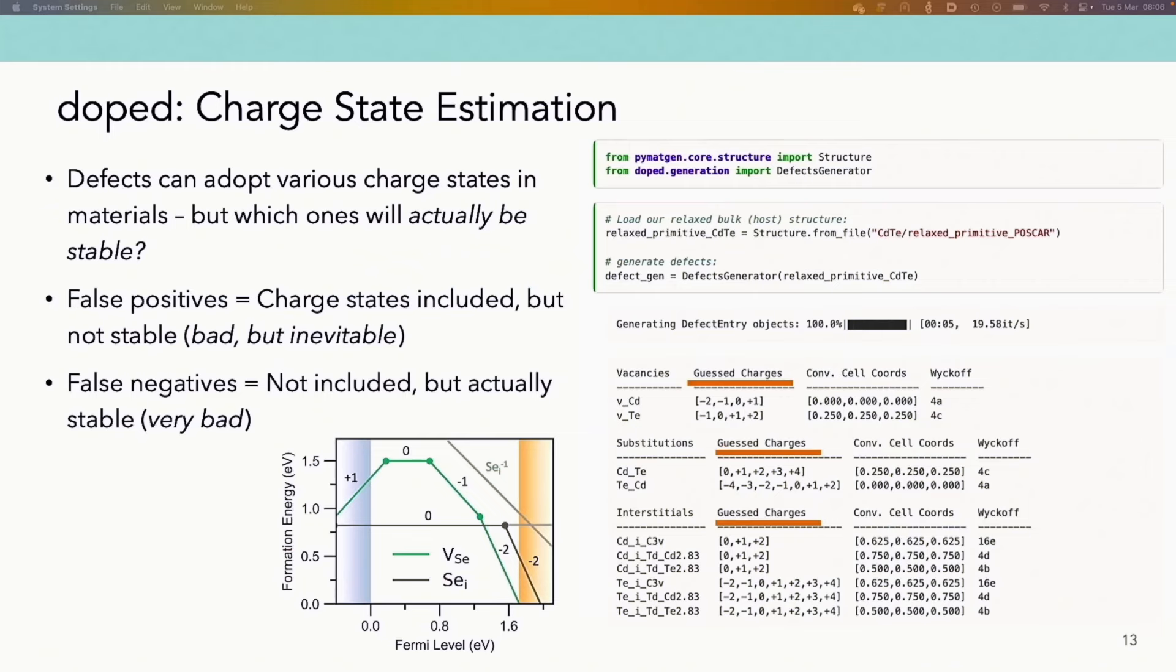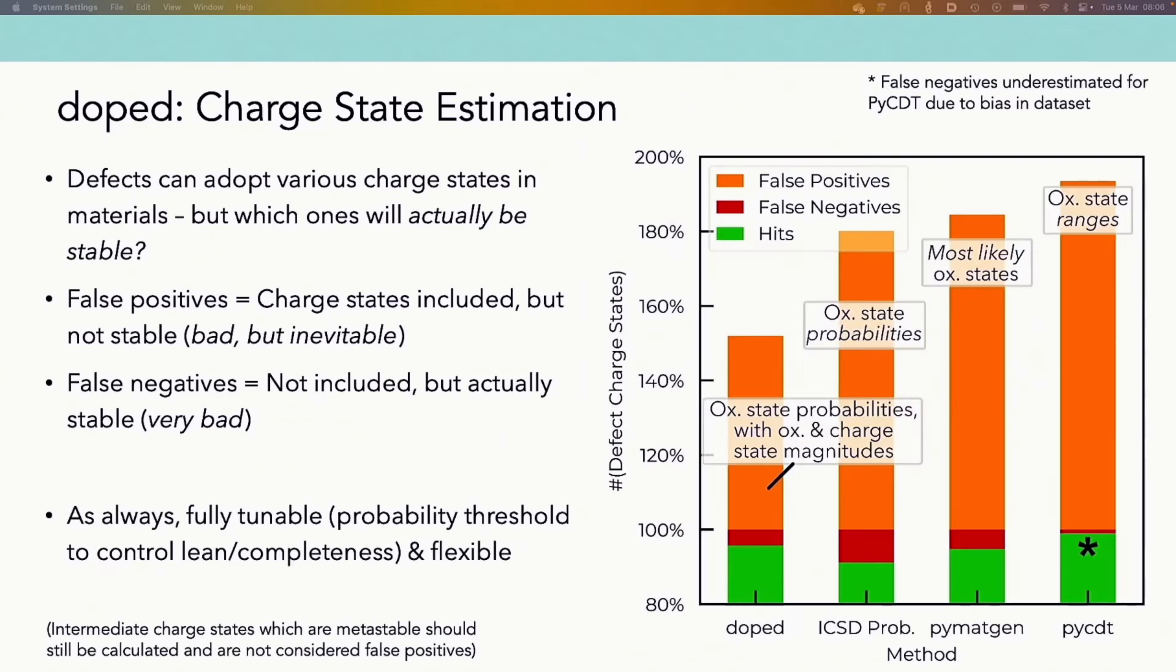So in general, defects can adopt various charge states in materials, most notably in semiconductors and insulators. So at the beginning of our defect investigation, we typically need to choose a range of potential charge states to calculate, as shown here in this kind of default output from DOPED. In this way, we can think about false positives, which are charge states that we included in our calculation set and calculated but ended up not being stable, and so in theory didn't need to be calculated, or essentially our wasted calculations. While false negatives would be charge states that we didn't include but actually are stable, which is quite bad of course because we could be missing out on important behavior.